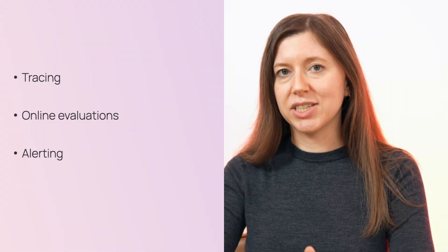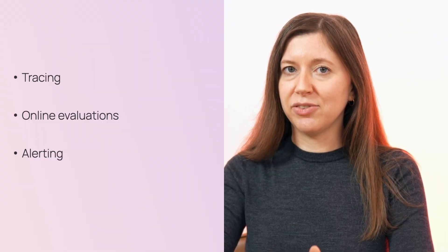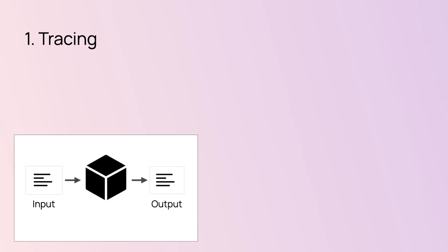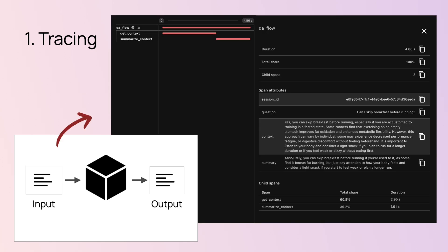When we talk about observability in production, we usually talk about three steps: first is tracing, two is online evaluations, and three is alerting. Tracing helps you capture user data for every interaction. You can log complete sessions and get full transcripts. For complex systems like RAG or agents, it's also useful to see all intermediate steps — for instance, which database entries were retrieved and how long it took.